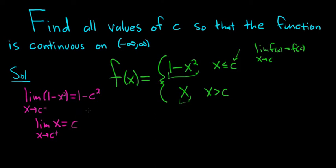So the limit from the left is equal to 1 minus c squared. The limit from the right is equal to c. The limit will exist when the one-sided limits are equal. Therefore, that means that 1 minus c squared is equal to c. So now we have to solve this equation for c. We can subtract c, so we get 1 minus c squared minus c equals 0. We could rearrange this as negative c squared, negative c plus 1 equals 0.